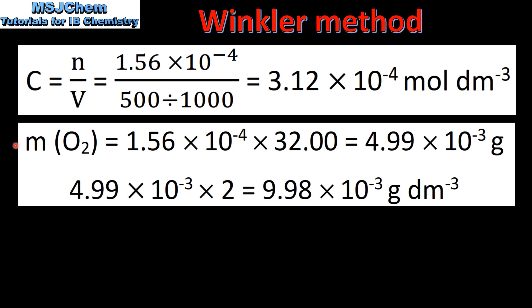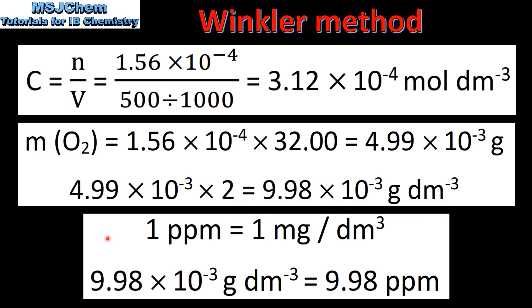Next we will calculate the concentration of dissolved oxygen in grams per decimeter³. To do this we need to convert from moles to grams. So we multiply the amount in moles of oxygen by the molar mass of oxygen. Next we multiply this mass by 2 because our original water sample was only 500 centimeters cubed.